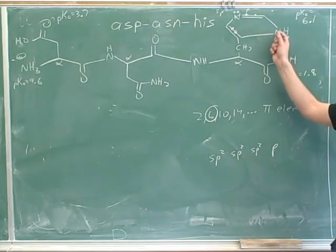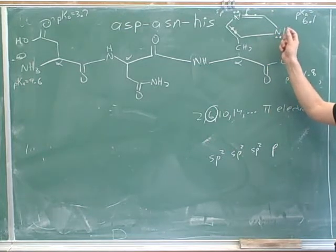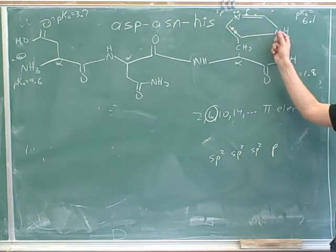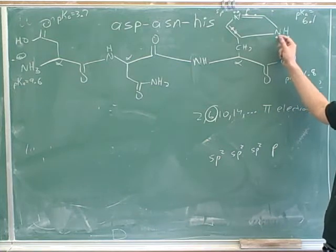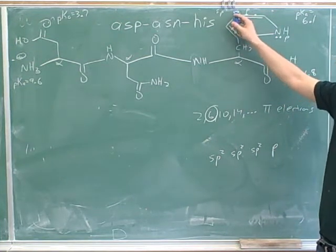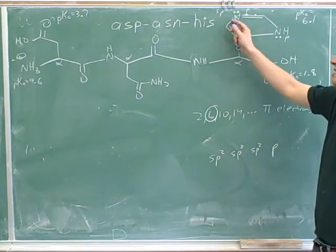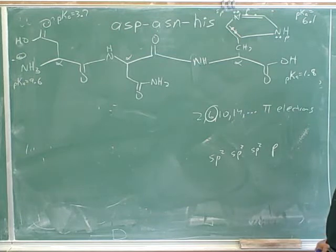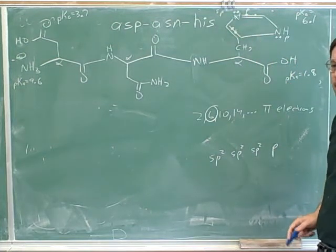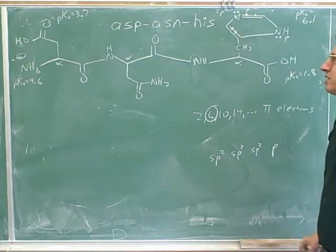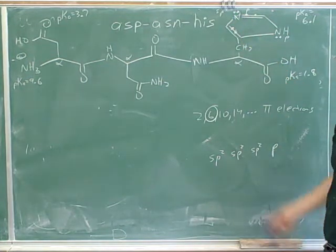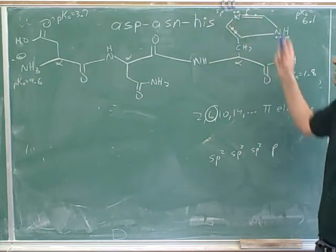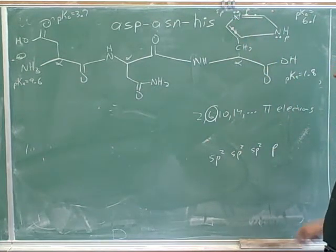So does this nitrogen want to donate this lone pair? No — because then it would lose the aromaticity. These electrons are already doing good work as pi electrons; if it formed a bond, they couldn't be pi electrons anymore. So these are not available for donation. But the other nitrogen's lone pair is available for donation because it's not part of the pi system. That nitrogen is already using its p orbital for its pi bonds, so which nitrogen is going to donate its lone pair? This one up here — and that was your original guess as well. The basic nitrogen is the one not using its lone pair in the pi system.